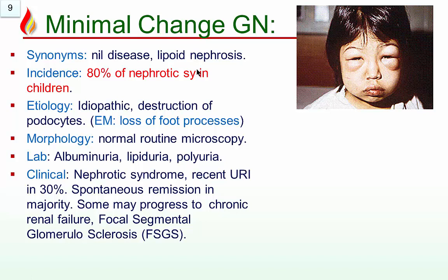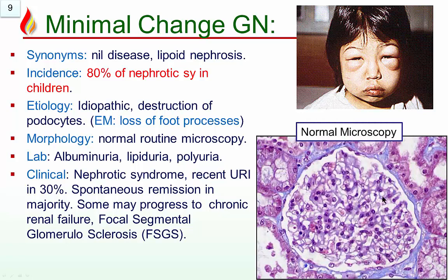Minimal change glomerulonephritis is the classic case — the commonest in children, also known as NIL disease or lipoid nephrosis. 80% of cases of nephrotic syndrome in children are minimal change disease. Etiology is unknown idiopathic, but there is destruction of podocytes, only seen under electron microscopy. By routine microscopy there is no change — it looks like normal glomerulae with patent capillaries. In the laboratory: albuminuria and lipiduria. Clinically it is nephrotic syndrome, usually following a recent upper respiratory tract infection in about 30% of children. Spontaneous remission occurs in the majority, but some may progress to chronic renal failure or focal segmental glomerulosclerosis.